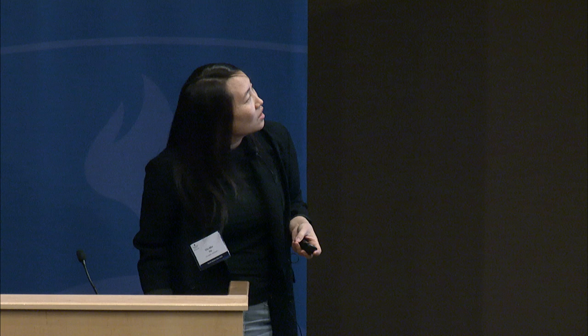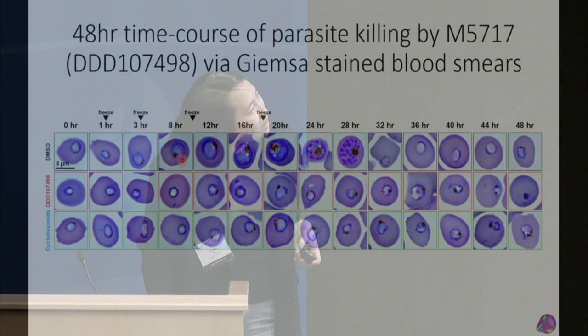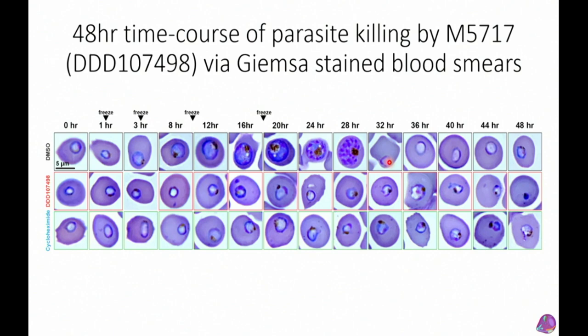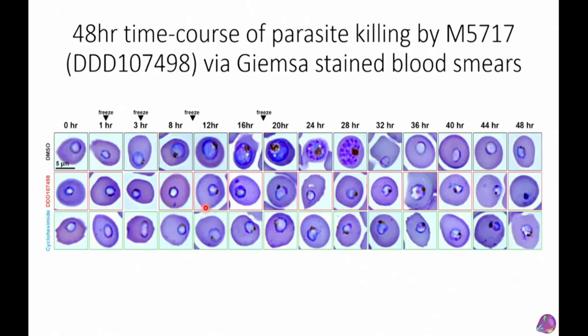First we ran a 48-hour time course, taking blood smears every four hours. Control parasites developed into beautiful schizonts and then invaded normally. Drug-treated parasites stalled out at early trophozoites, persisting like that for a long time before becoming pyknotic and dying. The drug is known to inhibit translation within 40 minutes, so we selected one-hour and three-hour time points for cryo-ET.